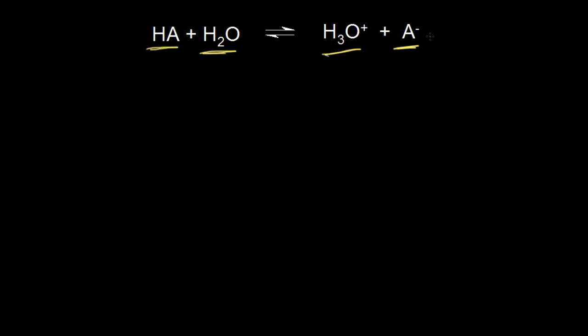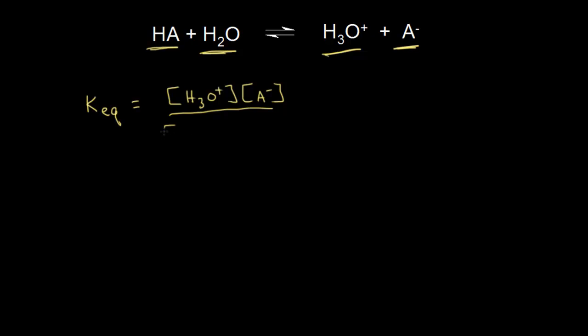When the reaction reaches equilibrium, the rate of the forward reaction is equal to the rate of the reverse reaction. And from general chemistry, the position of the equilibrium is described by a Keq expression, which is defined as the concentration of the products over the concentration of the reactants. So the Keq expression for this generic acid-base reaction would be the concentration of H3O+ times A minus, over the concentration of HA and H2O.